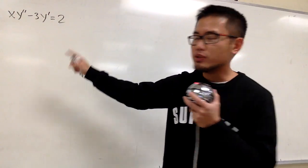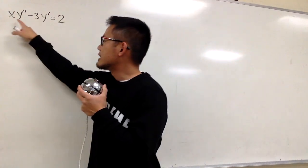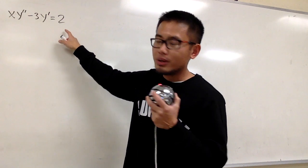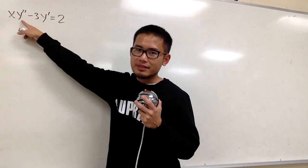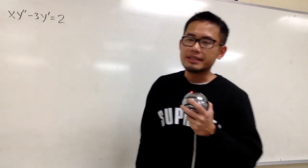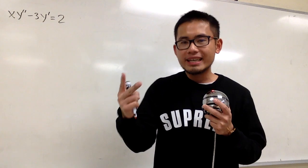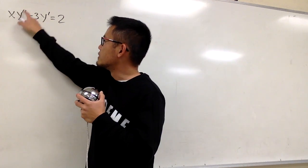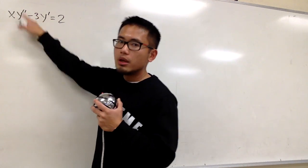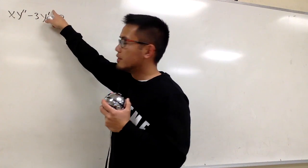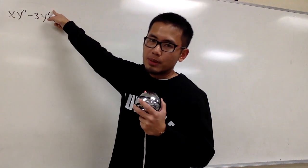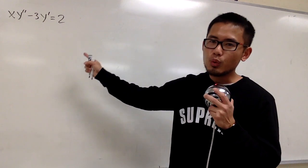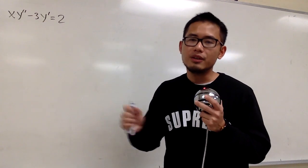Let's go ahead and solve this differential equation. Here we have x times y double prime minus 3y prime, and this equals 2. Notice that because we have the second derivative here, this is an example of a second-order differential equation. And also, because the second derivative is to the first power and the first derivative is also to the first power, this is still linear. So altogether, this is a second-order linear differential equation.